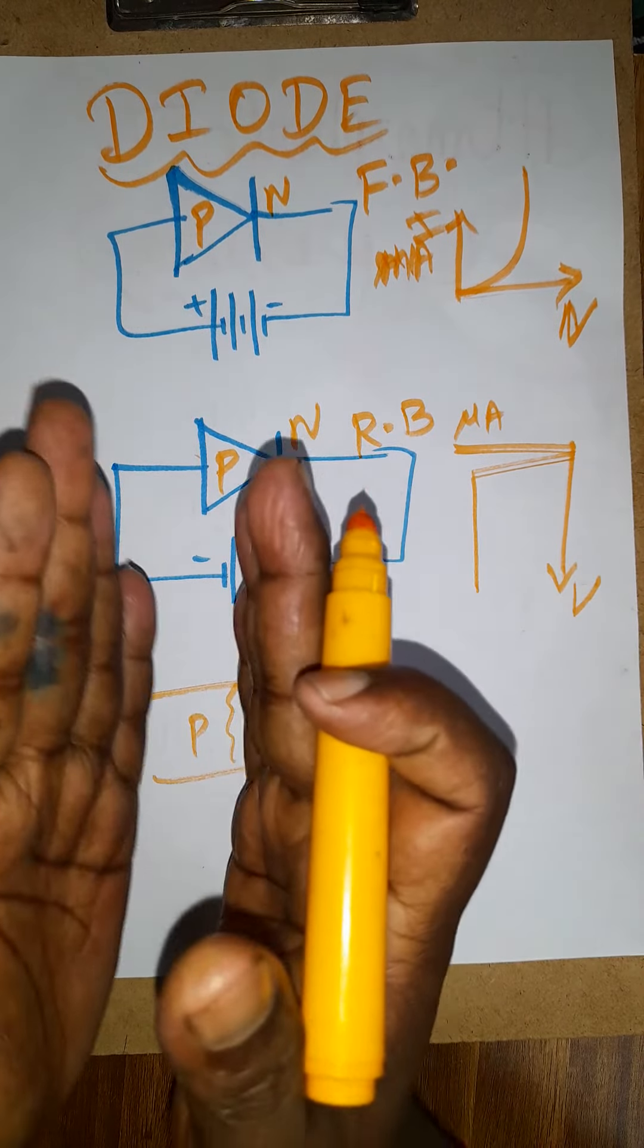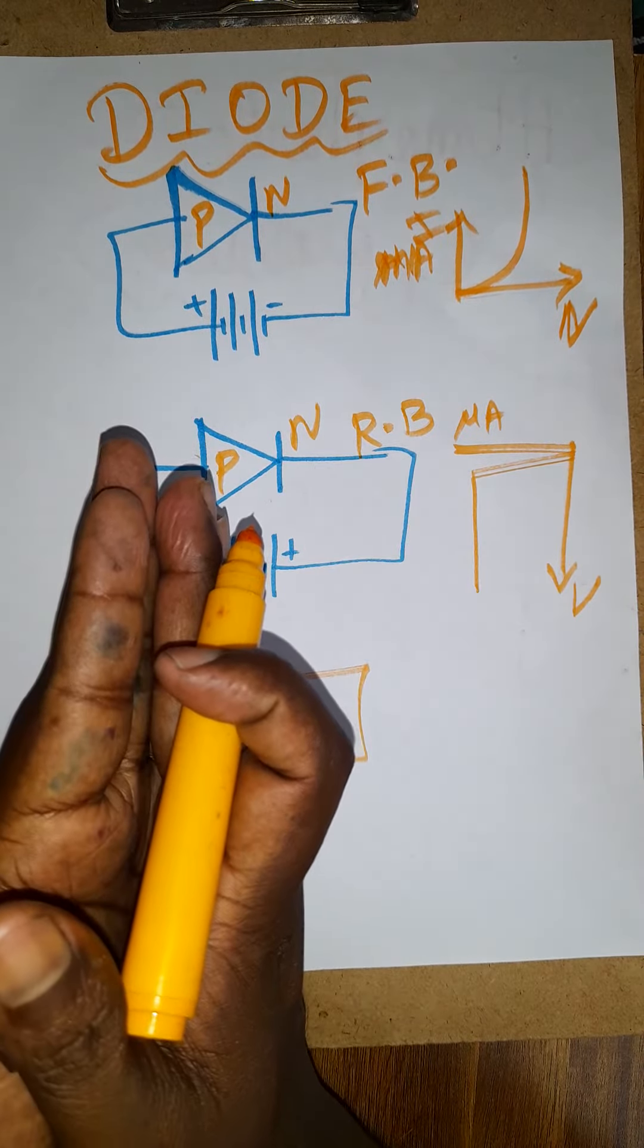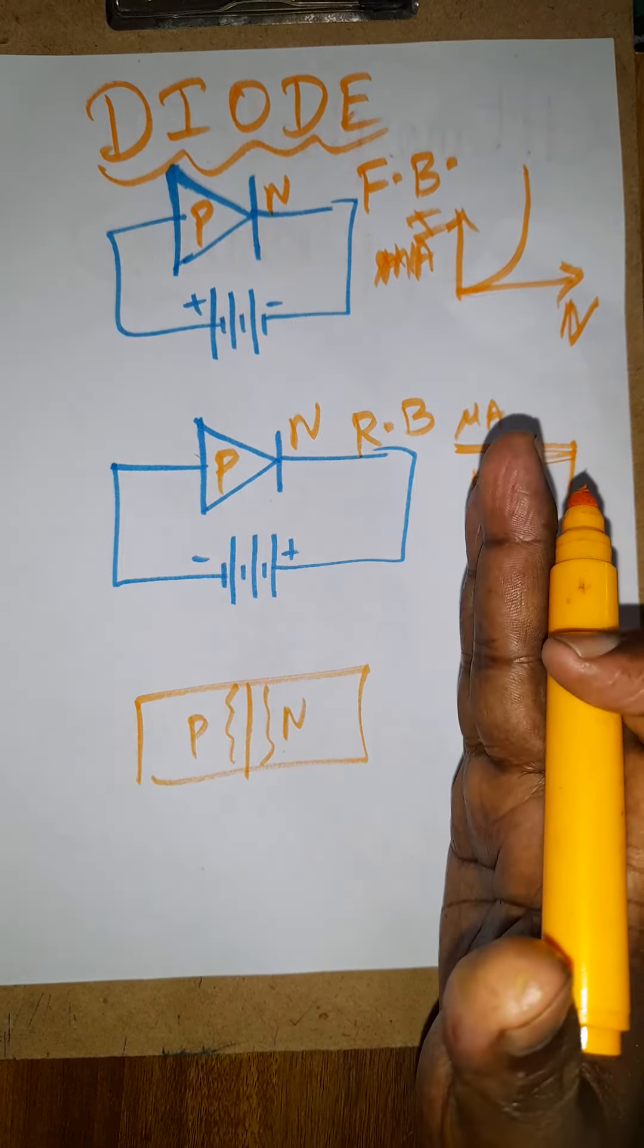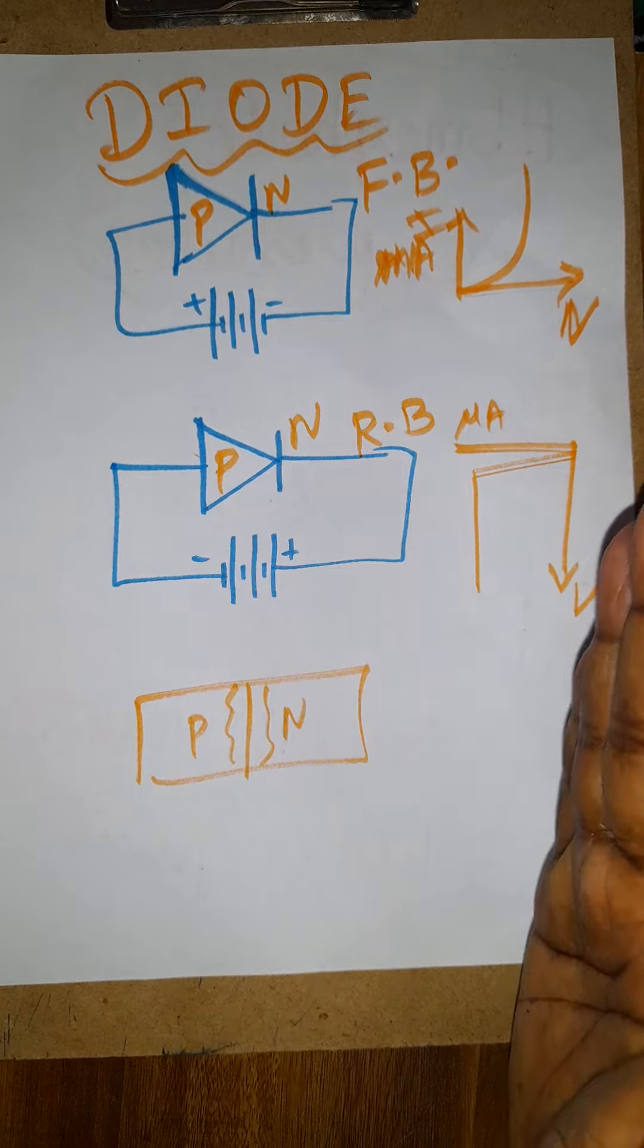In forward bias, the potential barrier will be decreased, so the conduction will increase more. In reverse bias, the potential barrier should increase, so the resistance will offer more. Thank you.